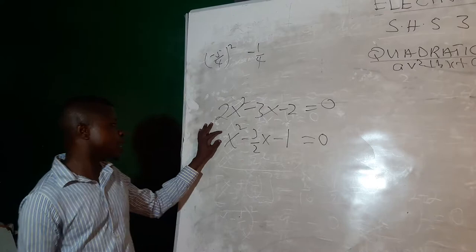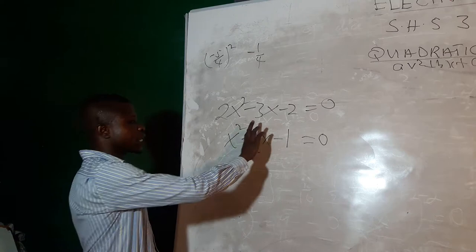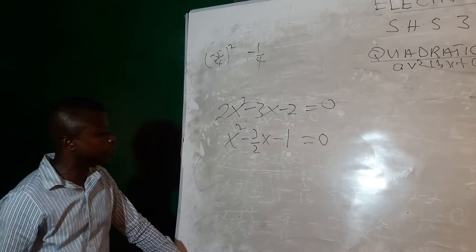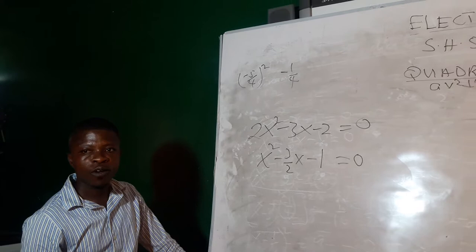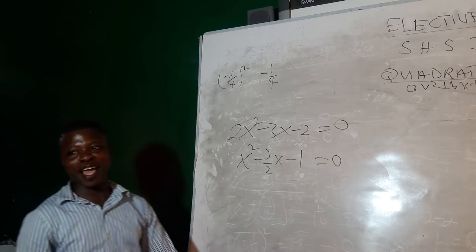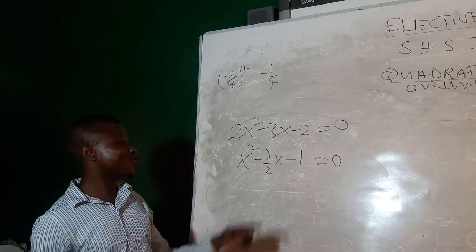Now that the coefficient of x squared is 1, we have to check whether this expression is a perfect square. We find half the coefficient of x and check if its square equals the constant term. Half of negative 3 over 2 gives us negative 3 over 4, and negative 3 over 4 squared gives us 9 over 16. Since 9 over 16 is not equal to negative 1, it is not a perfect square.